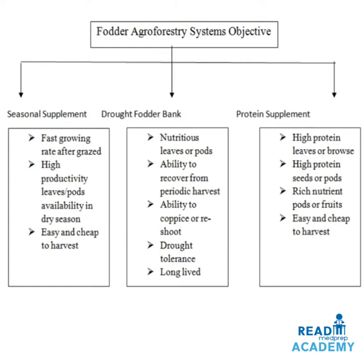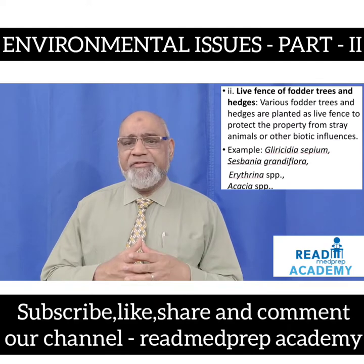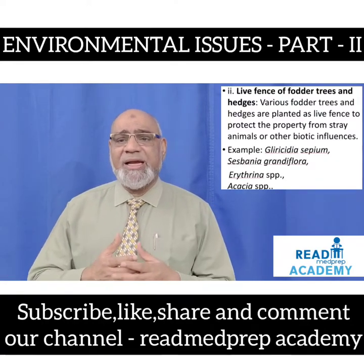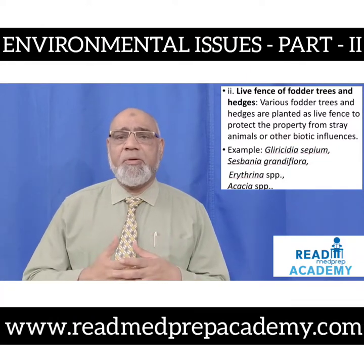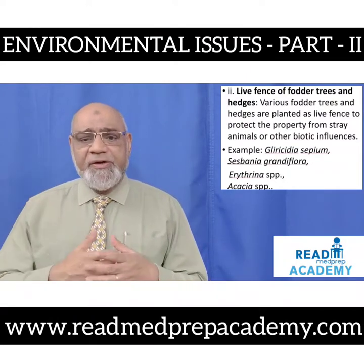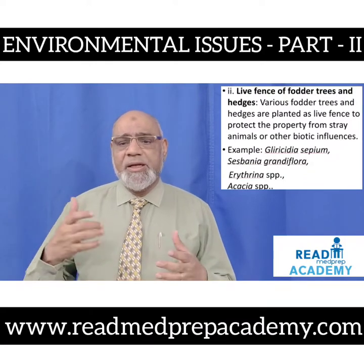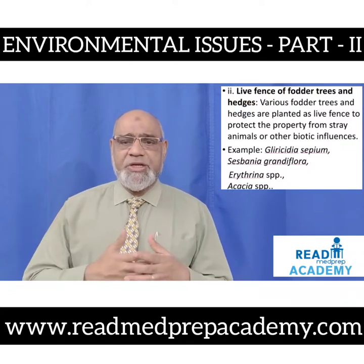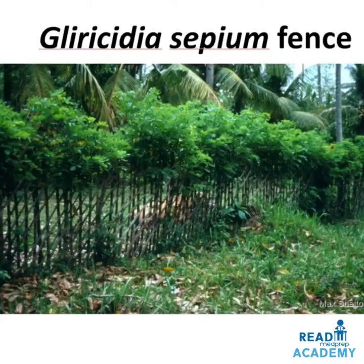For protein supplement: high protein leaves or browse, high protein seeds or pods, rich nutrient pods or fruits, and easy and cheap to harvest. The live fence of fodder trees and hedges involves various fodder trees and hedges planted as a live fence to protect the property from stray animals or other biotic influences. Examples are Gliricidia sepium, Sesbania grandiflora, Erythrina species and Acacia species. Here you can see the fence being formed by Gliricidia sepium plants.